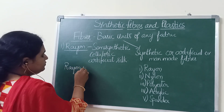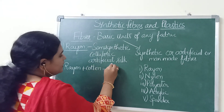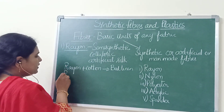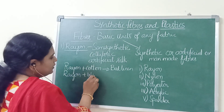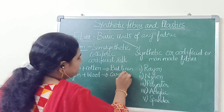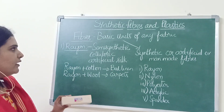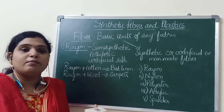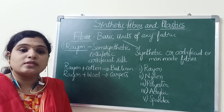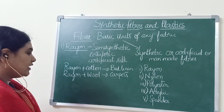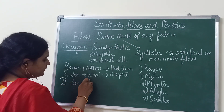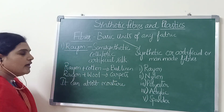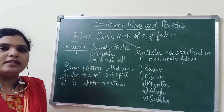If rayon is mixed with cotton, it is used in the preparation of bed linen and bed sheets. Rayon mixed with wool is used in the manufacturing of carpets. And as it is a semi-synthetic fiber, it can absorb some moisture from our body whenever we sweat — it has the ability to absorb sweat to some extent, which is one of its advantages.